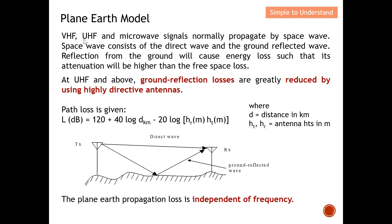VHF, UHF, and microwave signals normally propagate by space wave. Space wave consists of the direct line-of-sight wave plus the ground-reflected wave. Reflection from the ground causes energy loss such that attenuation will be higher than with the free space loss equation. In short, when we apply the plane earth model, the path loss will be higher compared to free space, because the ground-reflected wave can partially or totally cancel the direct line-of-sight wave.